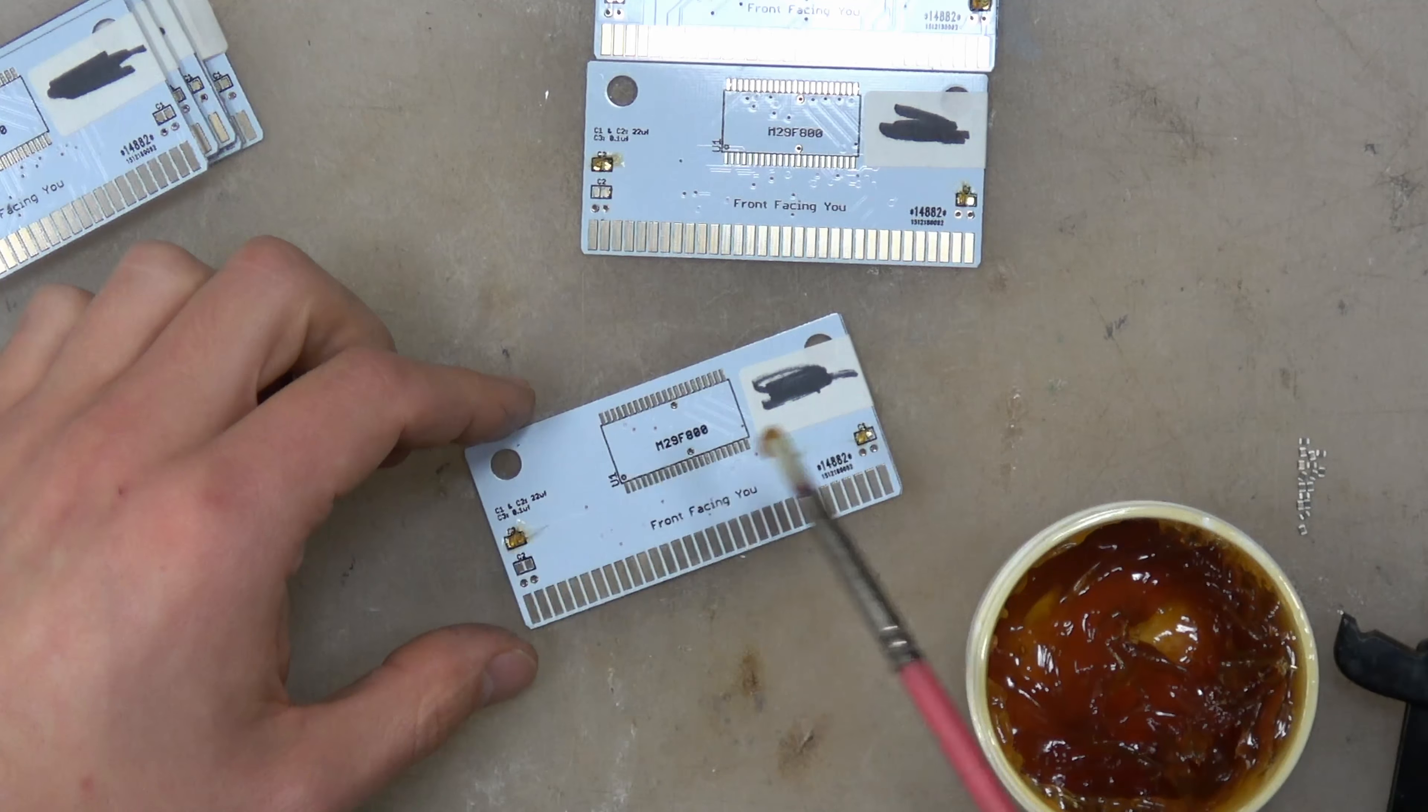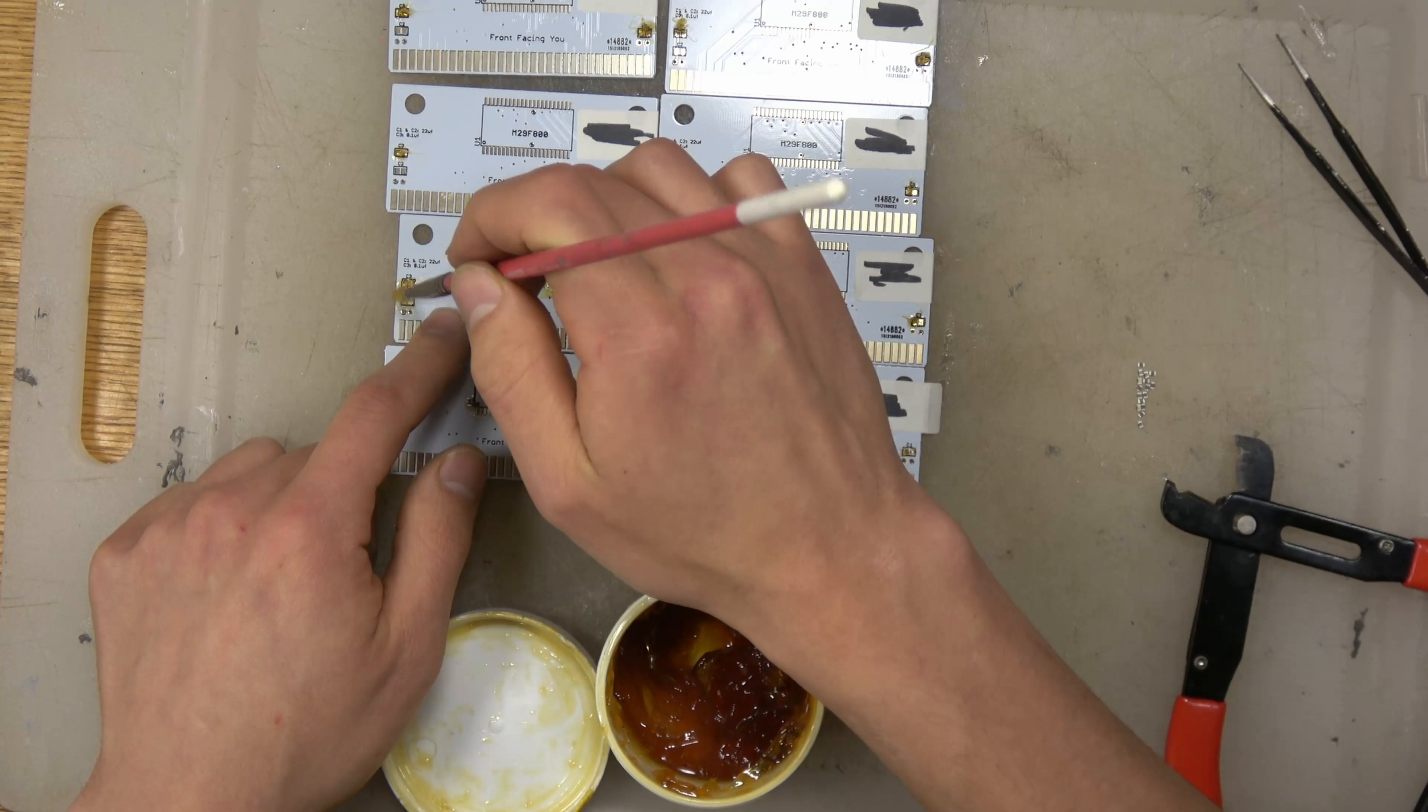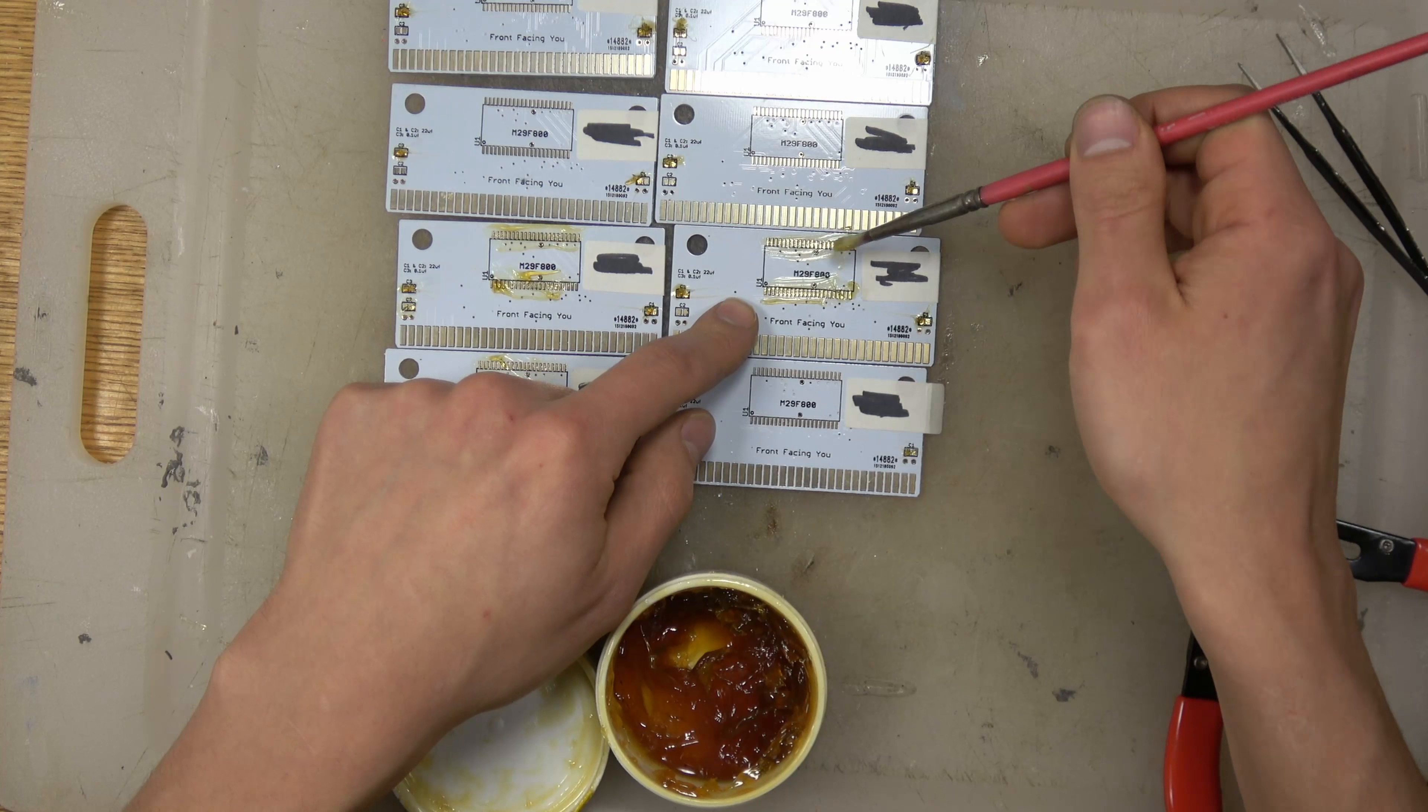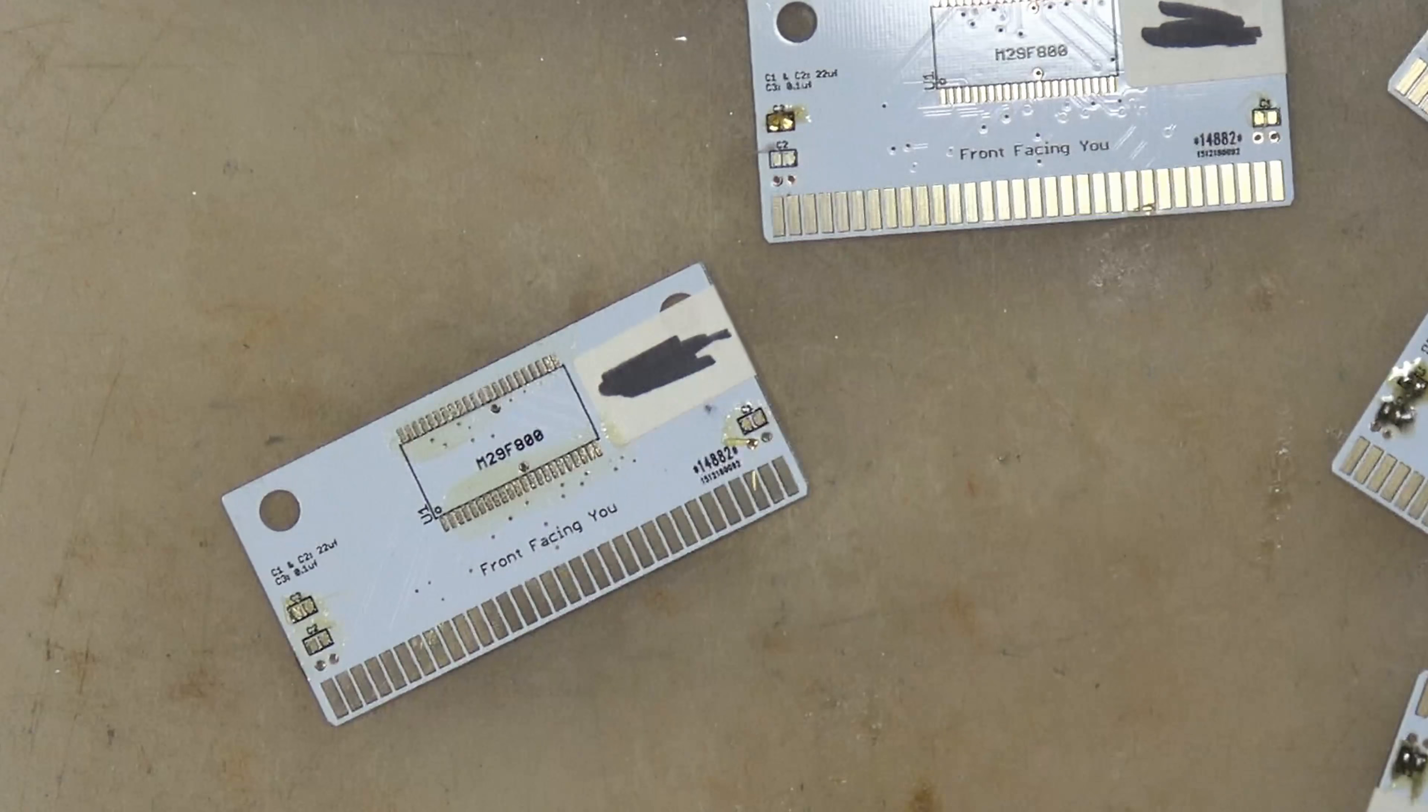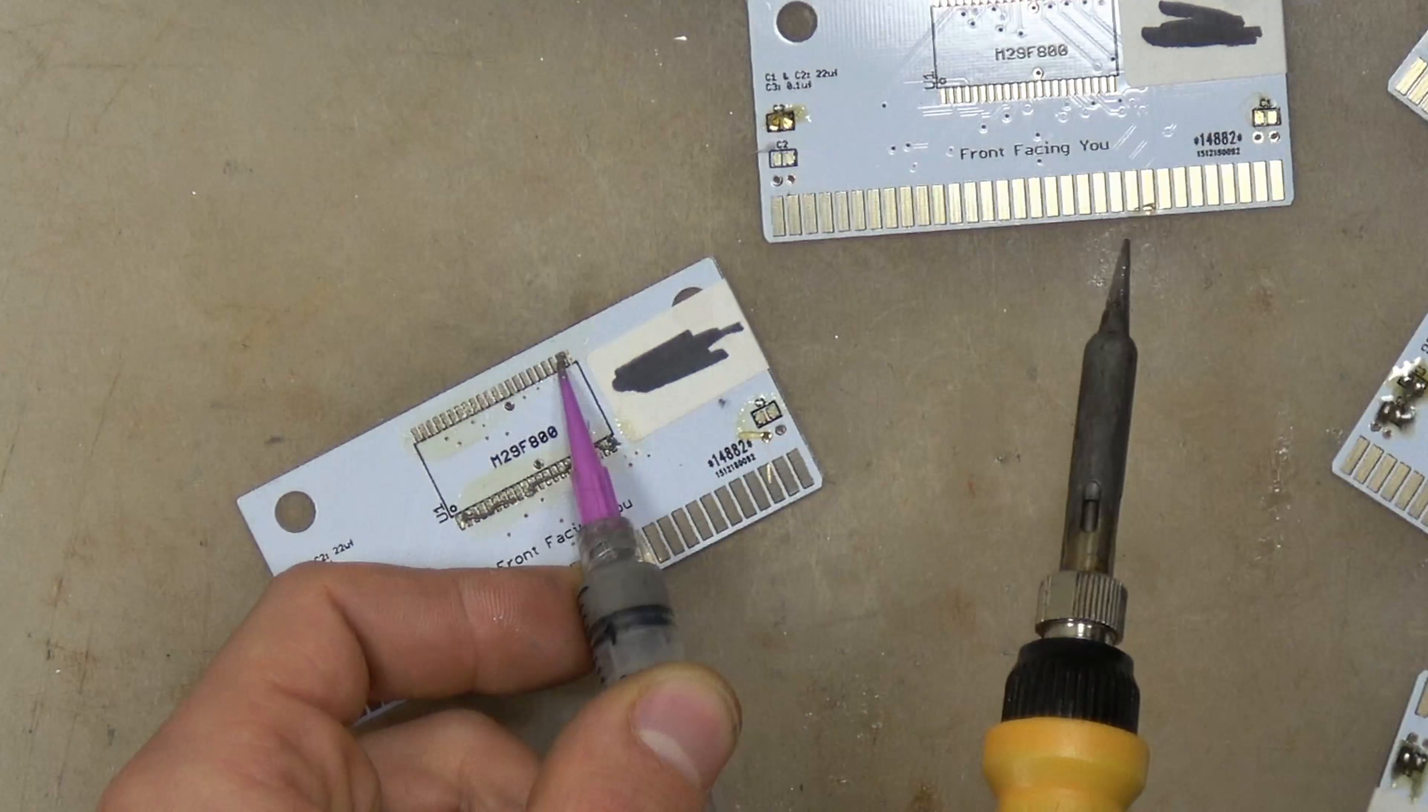You don't necessarily fully need flux but it makes your life easier. We're just putting flux all over all the different areas and then we're gonna tin them by applying solder before we actually solder, using solder paste and regular solder which varies based upon what you're going to be soldering.